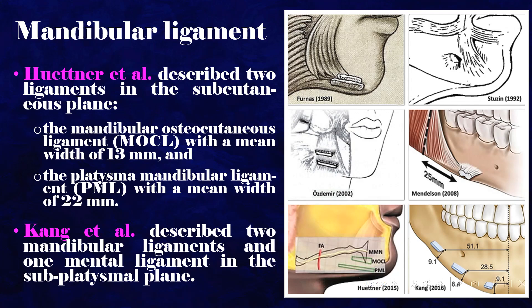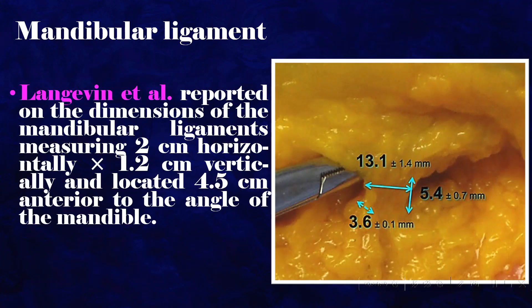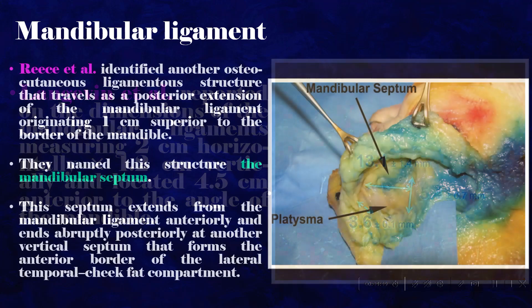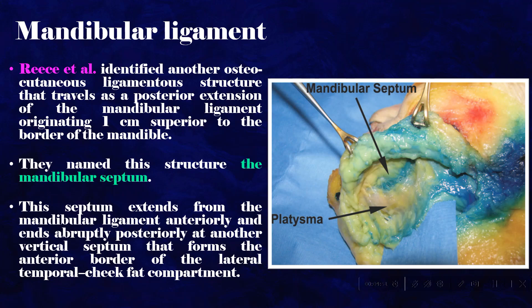Kong et al. described two mandibular ligaments and one mental ligament in the subplatysmal plane. Langevin et al. reported on the dimensions of the mandibular ligaments measuring 2 cm horizontal by 1.2 cm vertical, located 4.5 cm anterior to the angle of the mandible. Rees et al. identified another osteocutaneous ligament structure that travels as a posterior extension of the mandibular ligament, originating 1 cm superior to the border of the mandible, naming this structure the mandibular septum.